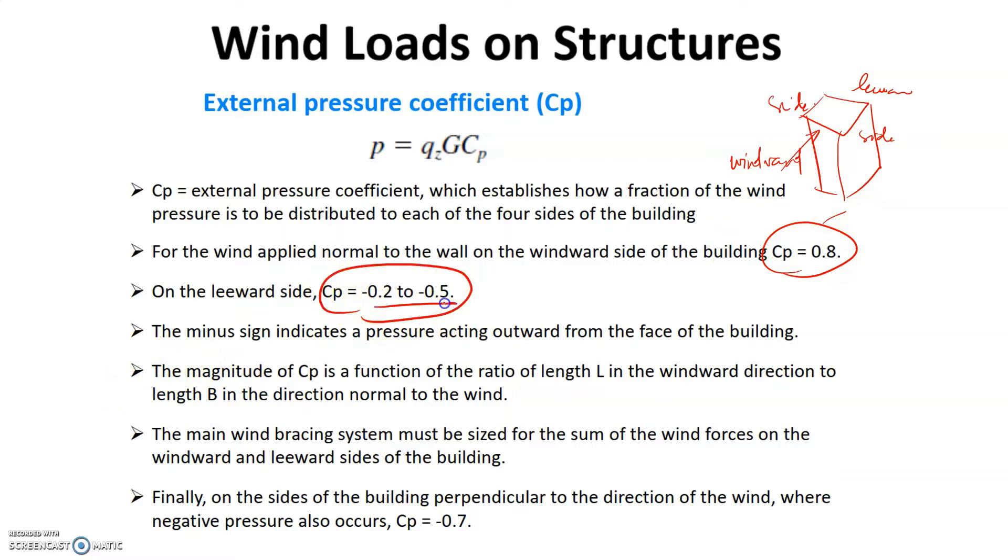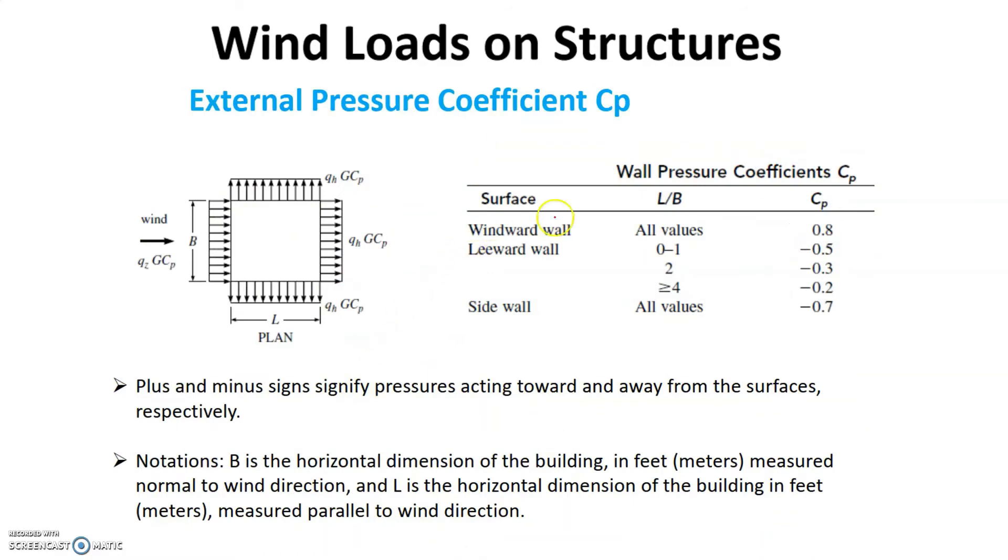On the windward face, the value of Cp is 0.8. However, on the leeward side, it varies from minus 0.2 to minus 0.5, which we will be looking into again. On the side walls, the sides of the building, the Cp is a constant which is minus 0.7. On the windward side, the Cp value is 0.8.